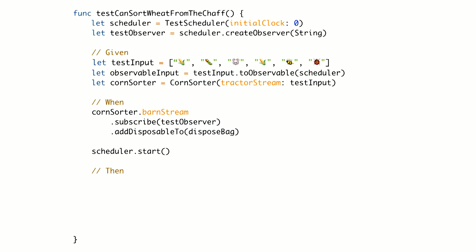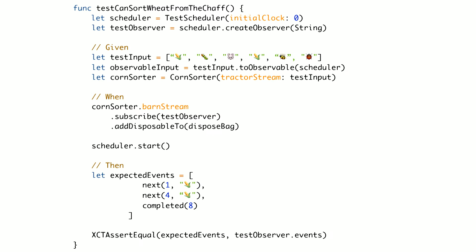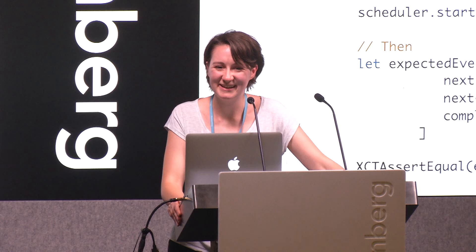You'll also notice there's a dispose bag there. If you're not familiar with Rx, it might seem odd. It's specific to RxSwift — other languages don't use it. It's a way of cleaning up after yourself, so you don't leave litter lying around. We then start our scheduler. Finally, we declare the expected events — these are the order in which we expect things to happen and the time at which we expect them to come through. Test time doesn't start at zero like an array; at time zero that's when our scheduler starts and the stream opens. The first event happens at one, and then we complete. And then we simply assert that those two things are the same. That's all there is to testing with RxSwift.